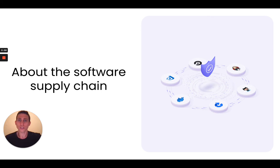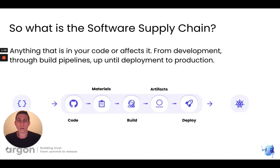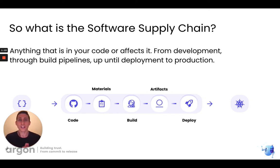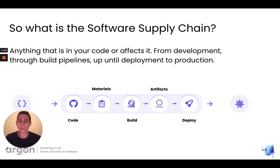The software supply chain is a term borrowed from the physical world, where it describes the path or route physical products or services take from the moment they are composed in the factory from all those different ingredients throughout the entire chain of supply, up until the time they are delivered to your doorstep. In software, the concepts are pretty similar — we have five different phases. Starting from the code itself and the source code management platforms that manage it, throughout the materials, which is another way of saying dependencies — open source dependencies and CI pipeline dependencies.